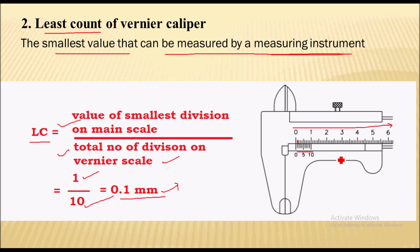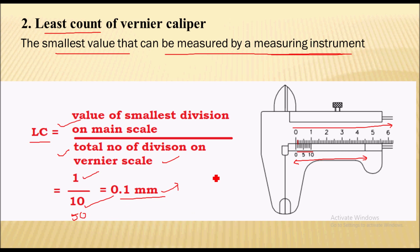See, if there are 15 graduations on the vernier scale, then what would be the least count? If we consider 15 graduations, then 1 divided by 15 would be the least count of this vernier caliper.